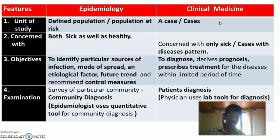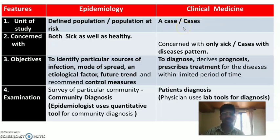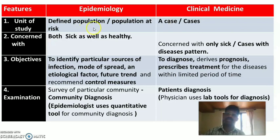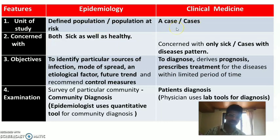In clinical medicine, the unit of study is a case or cases with clear-cut signs and symptoms. So in epidemiology the focus is on a defined population, whereas in clinical medicine it is an individually focused study on confirmed cases with particular signs and symptoms.